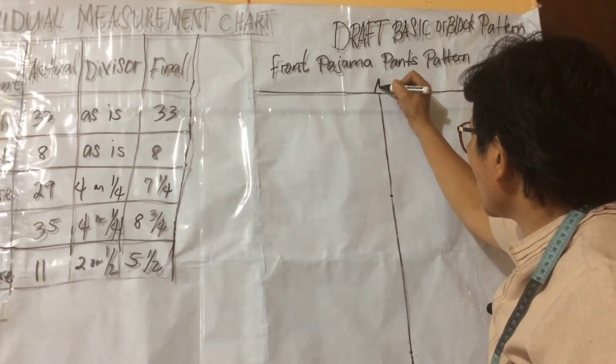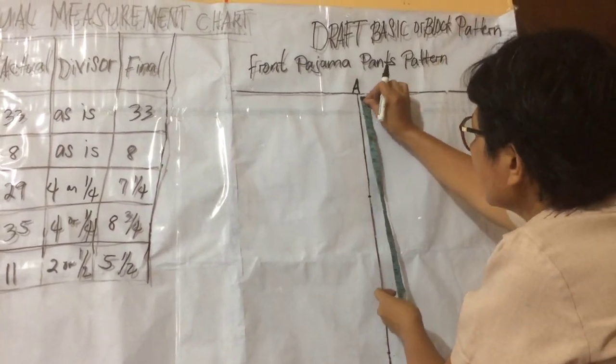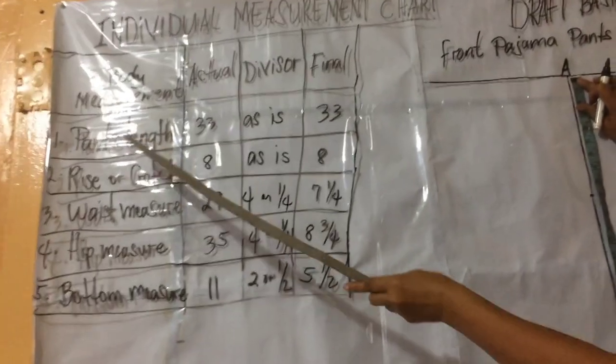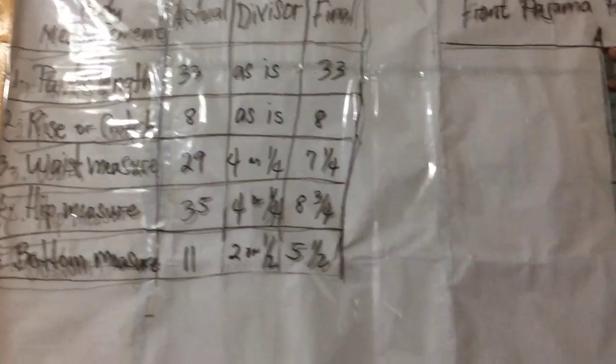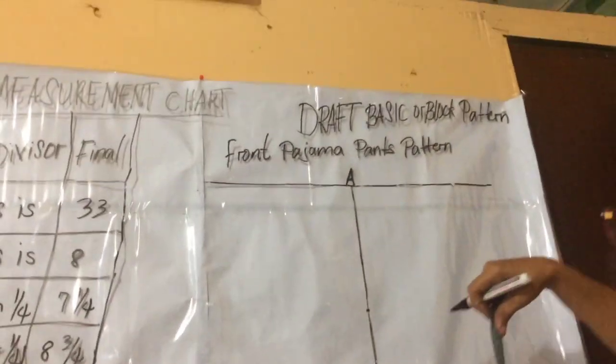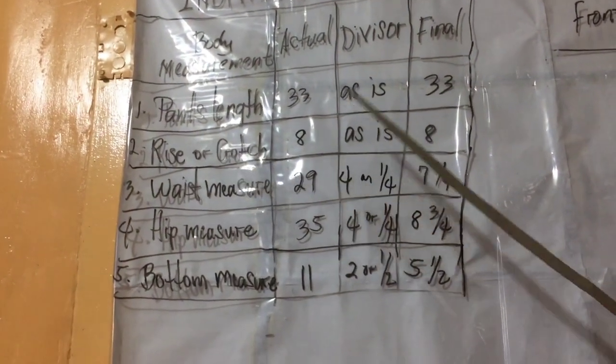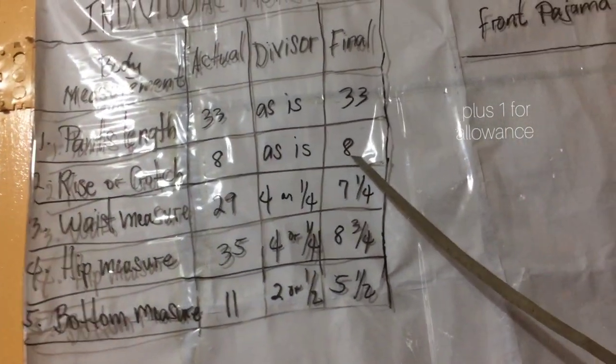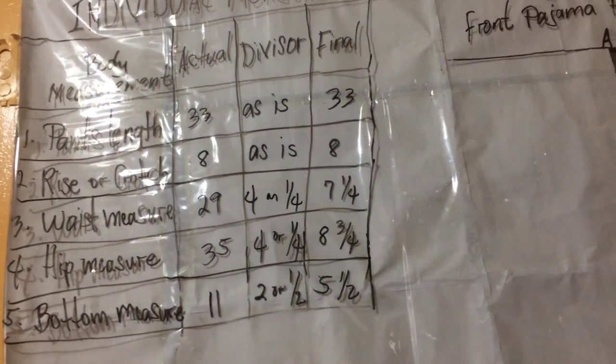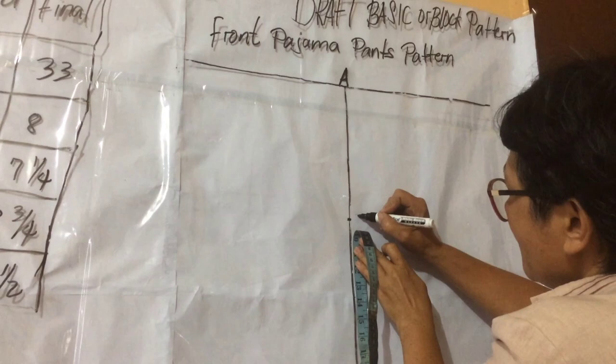A is the starting point. From point A, measure pants length, 33 inches. Mark B. From point A, measure crotch or rise, 8 inches plus 1 for the allowance, 9. From point A, measure 9 inches. Mark C.